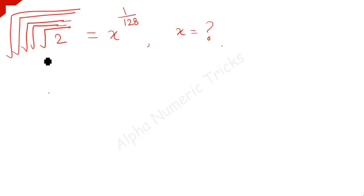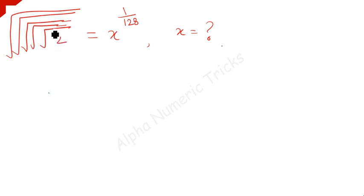Hi guys, now we are going to find out the value of x from this nice root problem. This 2 is under 5 roots — 1, 2, 3, 4, 5. So 2 is under 5 roots. We have to find out the value of x for this problem.